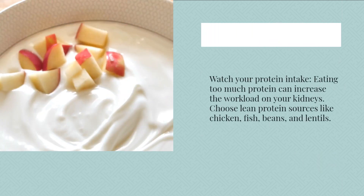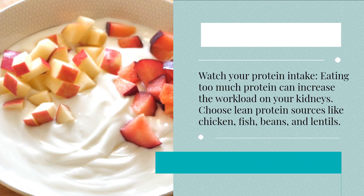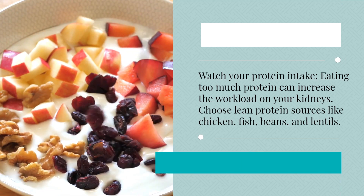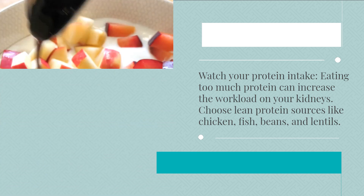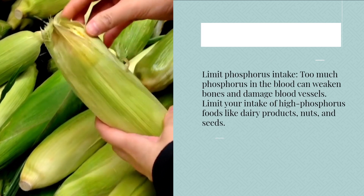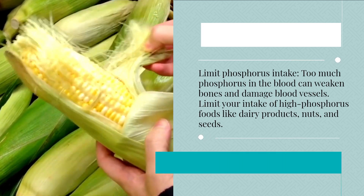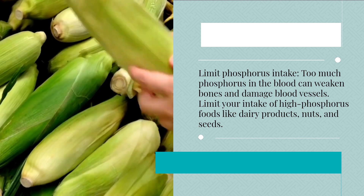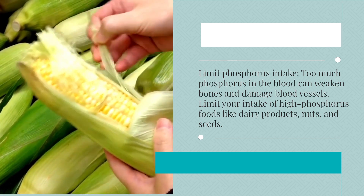Watch your protein intake. Eating too much protein can increase the workload on your kidneys. Choose lean protein sources like chicken, fish, beans, and lentils. Limit phosphorus intake — too much phosphorus in the blood can weaken bones and damage blood vessels. Limit your intake of high phosphorus foods like dairy products, nuts, and seeds.